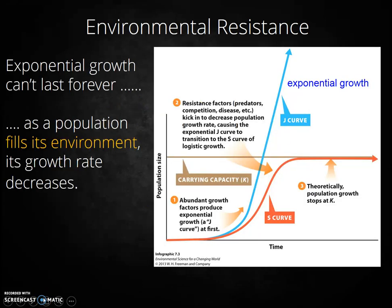Clearly, exponential growth cannot continue indefinitely. As a population fills an area, it encounters resistance factors — predation, competition for resources, disease, etc. These factors increase as population density increases, resulting in higher death rates and thus lower growth rates. As the growth rate decreases, the population no longer grows exponentially. Rather, as resistance factors reduce the growth rate and the population starts to level off, the population growth can now be modeled logistically.